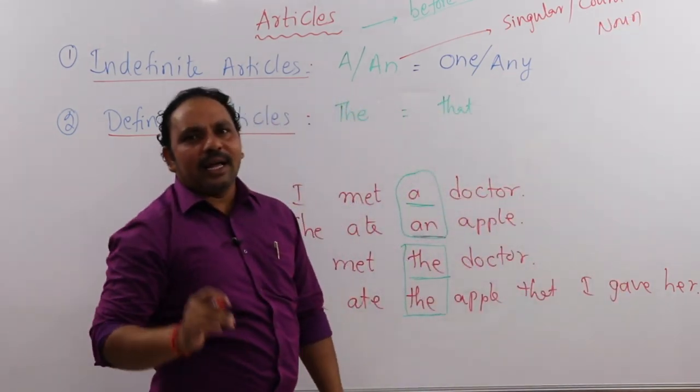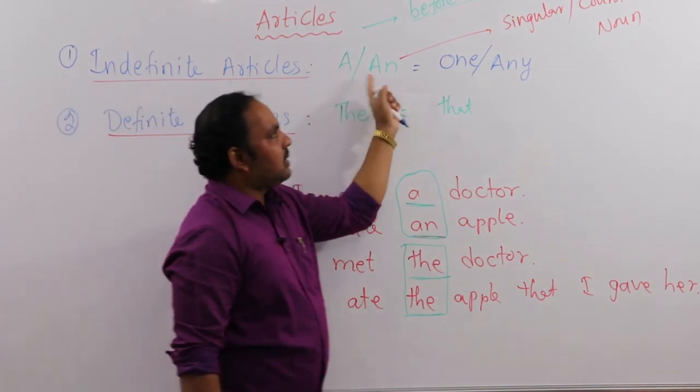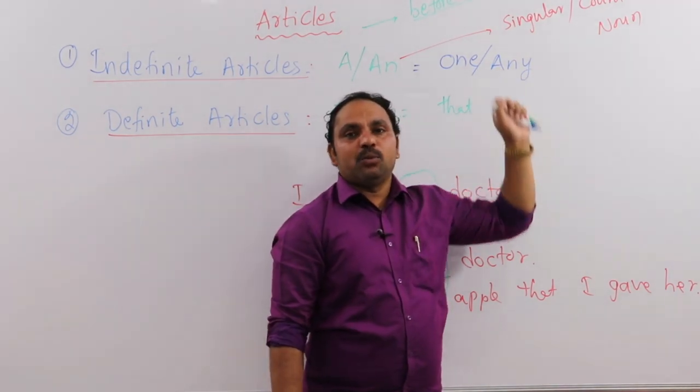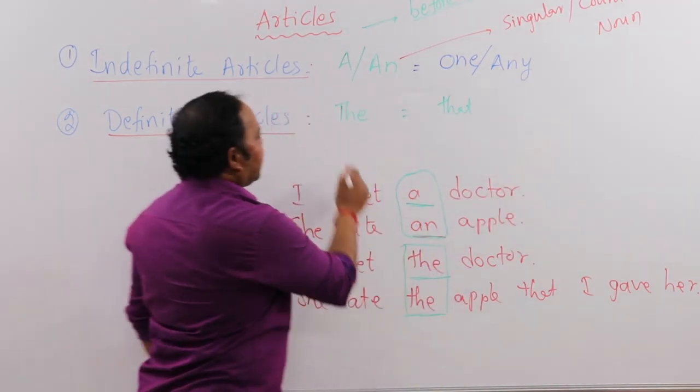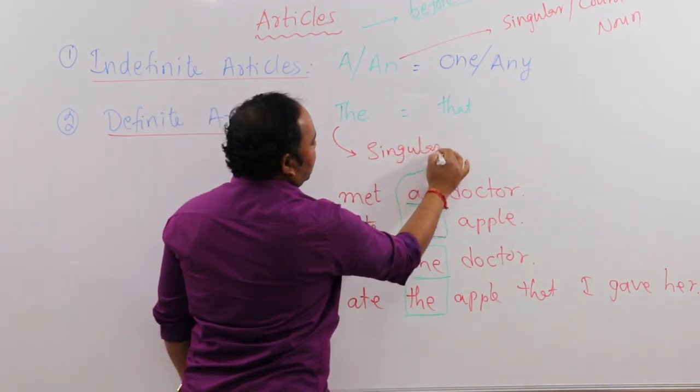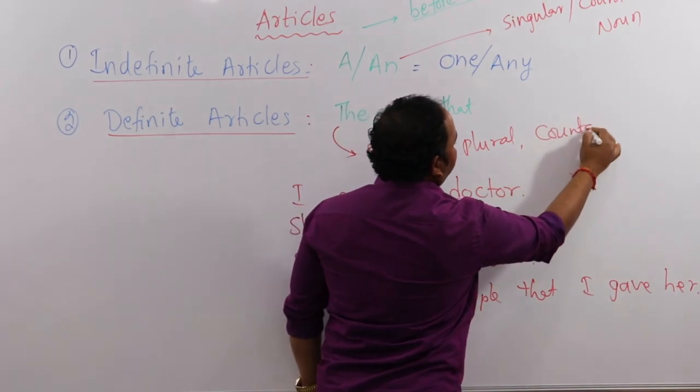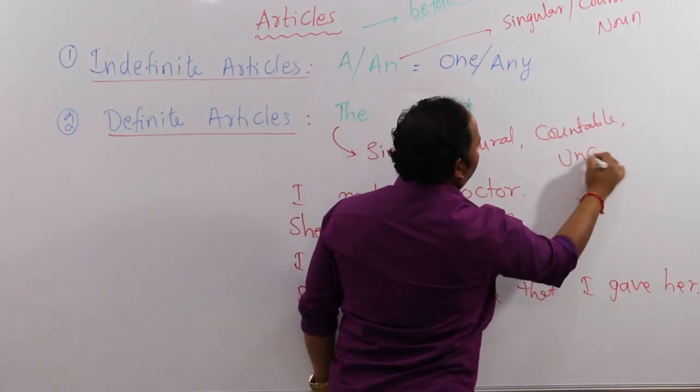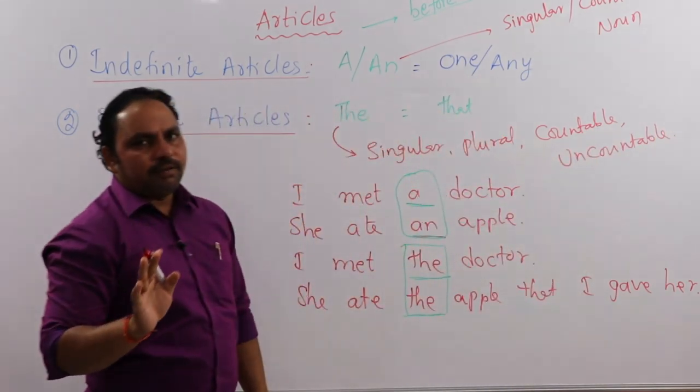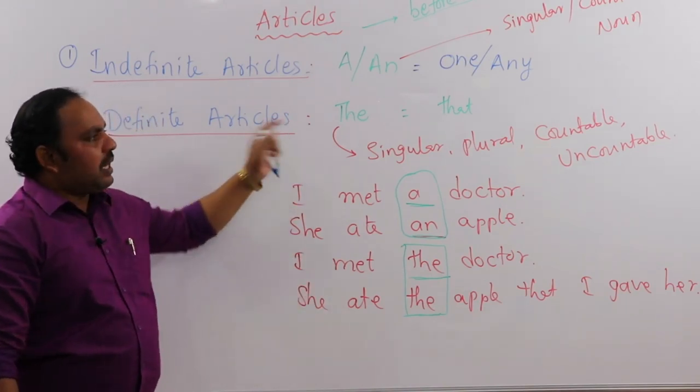Singular and countable nouns - we use articles before them. 'A' and 'an' articles are used before singular nouns and countable nouns. But the definite article 'the' can be used before singular, before plural, before countable, and also before uncountable nouns. All kinds of nouns - before any noun we can use 'the.'